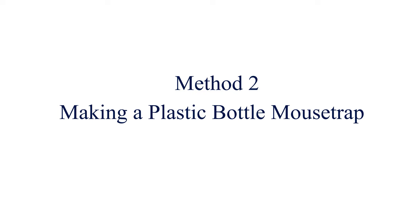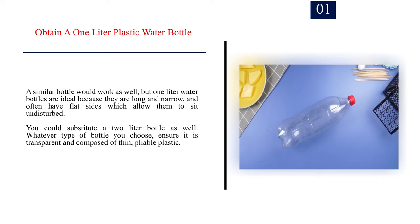Method 2: Making a plastic bottle mousetrap. Number 1: Obtain a 1-liter plastic water bottle. A similar bottle would work as well, but 1-liter water bottles are ideal because they are long and narrow, and often have flat sides which allow them to sit undisturbed. You could substitute a 2-liter bottle as well. Whatever type of bottle you choose, ensure it is transparent and composed of thin, pliable plastic.